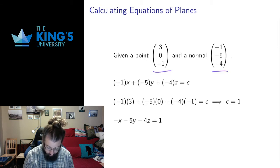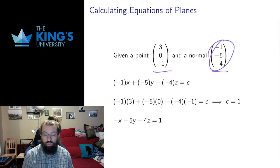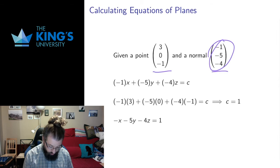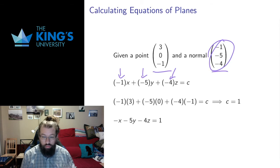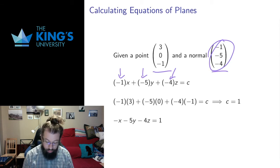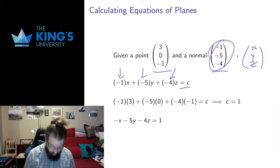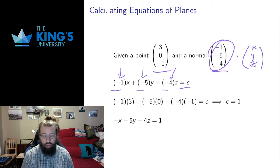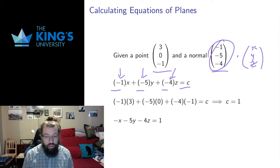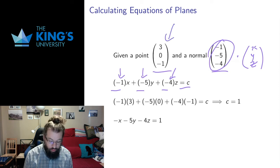So the first thing I do is I take the coefficients, the entries of the normal vector, and I put them in as the constants in the linear equation. Negative one, negative five, negative four, the dot product with x, y, z, and I make that equal to some unknown constant c. The normal gives me the three constants that are on the left side of the equation, but it doesn't give me the constant c.